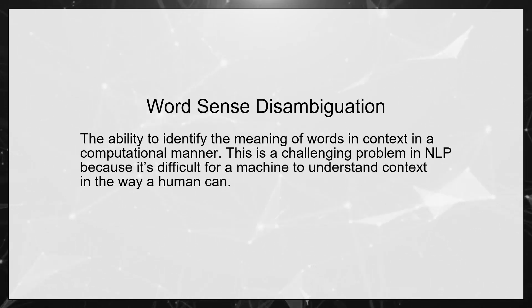Word Sense Disambiguation. The ability to identify the meaning of words in context in a computational manner. This is a challenging problem in NLP because it's difficult for a machine to understand context in the way a human can.